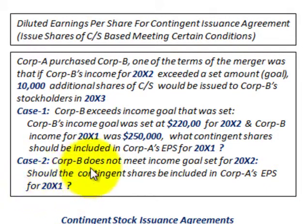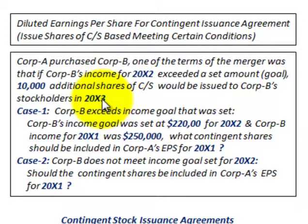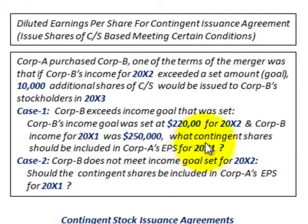The question for Case 2 is whether those contingent shares should be included in Corporation A's earnings per share for 20x1. So what we're looking at is that Corporation A is going to issue additional contingent shares of stock to Corporation B's shareholders if they meet a certain income goal — defined for year 20x2 — but those contingent shares wouldn't be paid out until 20x3. We need to calculate earnings per share for Corporation A based on year 20x1.